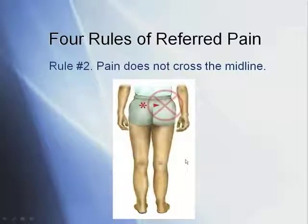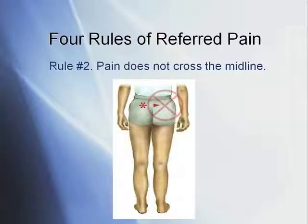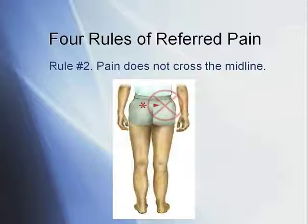Rule two: pain does not cross the midline. If you have pain on the right side of your back, it doesn't migrate to the left side, and vice versa. If pain switches sides, it means you have two separate injuries. Pain will refer into the buttock, down the leg, and even into the foot — but it will not cross from one side of the body to the other.